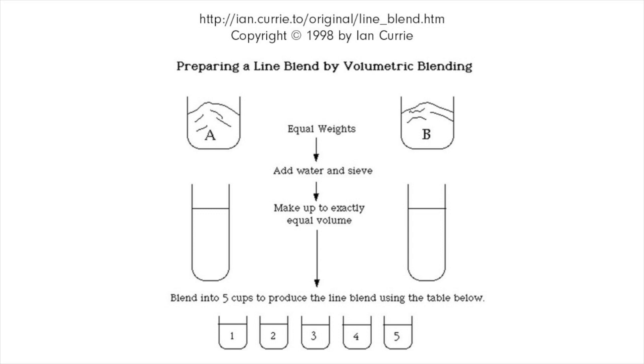Here's a diagram from his website showing how to prepare a line blend for volumetric blending. First, measure equal weights of the left and the right glaze. Then add water and mix and sieve as normal, and then add enough water to both glazes so that they are equal in volume. From there, you can use volumetric blending to mix the five test glazes.